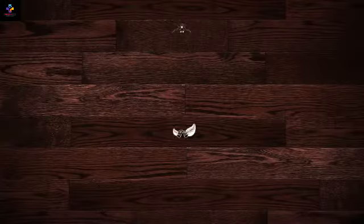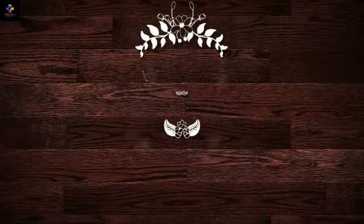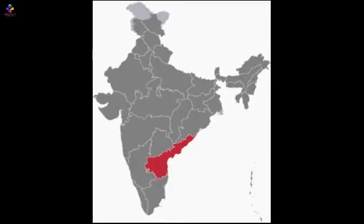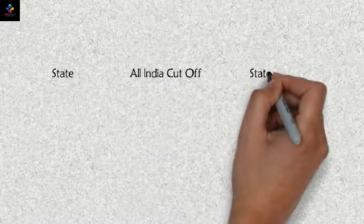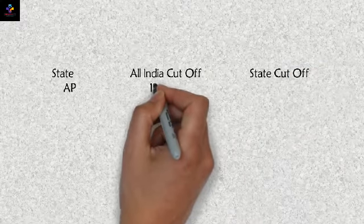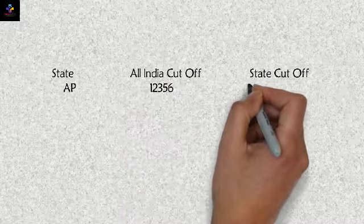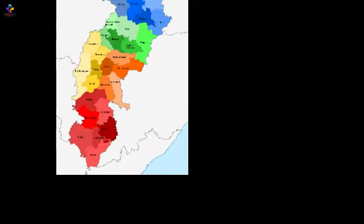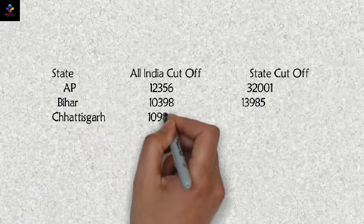Andhra Pradesh: all India cutoff was 12356 and the state cutoff was 32001. Bihar: all India cutoff was 10398 and state cutoff was 13985. Chhattisgarh had all India cutoff 10983 and state cutoff 46395.